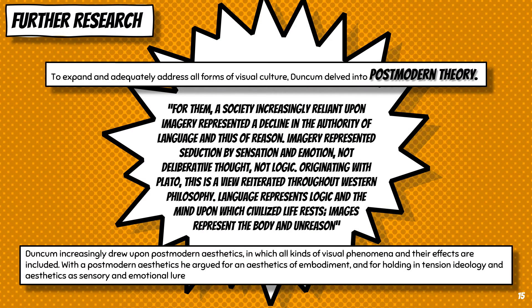To expand and adequately address all forms of visual culture, Duncan delved into postmodern theory. He discovered that visual culture, according to postmodernists, was a very sobering and depressing experience. Duncan continues: "For them, a society increasingly reliant upon imagery represented a decline in the authority of language and thus of reason. Imagery represented seduction by sensation and emotion, not deliberative thought, not logic. Originating with Plato, this is a view reiterated throughout Western philosophy. Language represents logic and the mind upon which civilized life rests. Images represent the body and unreason." Duncan increasingly drew upon postmodern aesthetics, in which all kinds of visual phenomena and their effects are included. With postmodern aesthetics, he argued for an aesthetics of embodiment, and for holding in tension ideology and aesthetics as sensory and emotional allure.